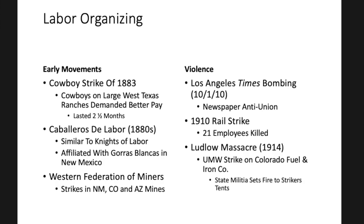There were labor efforts to organize some of the workers, going back to the late 19th century. In 1883, there was the Great Cowboys Strike in West Texas — it didn't last very long, and their demands for better pay really weren't met. There were also the Caballeros de Labor in the 1880s, similar to the U.S. Knights of Labor, but many labor organizations didn't welcome immigrant or minority workers — they were really organizing for white labor and Northern European immigrant labor. Some of the Caballeros were affiliated with the Gorras Blancas in New Mexico, and there were violent strikes in the mines of New Mexico, Colorado, and Arizona by the Western Federation of Miners, which did accept Mexican and Mexican-American laborers.